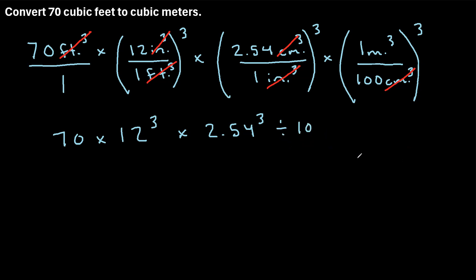So let's go ahead and write that. Divided by 100 cubed. So if you punch this all into a calculator, 70 times 12 to the third power, times 2.54 to the third power, divided by 100 to the third power, you get about 1.98.